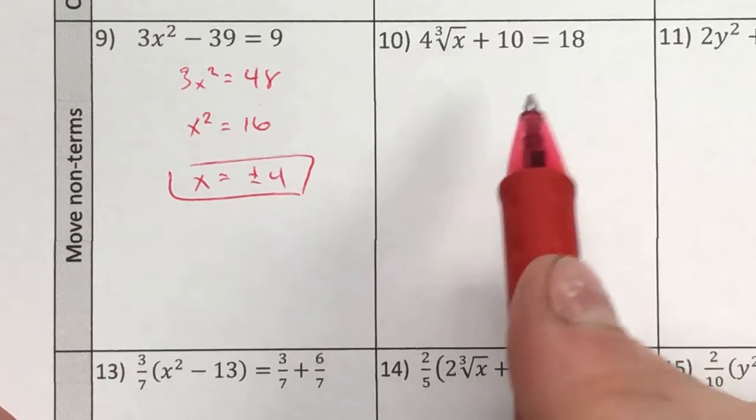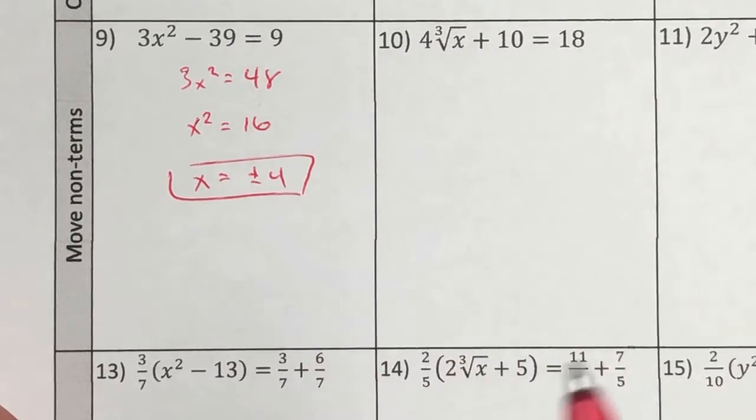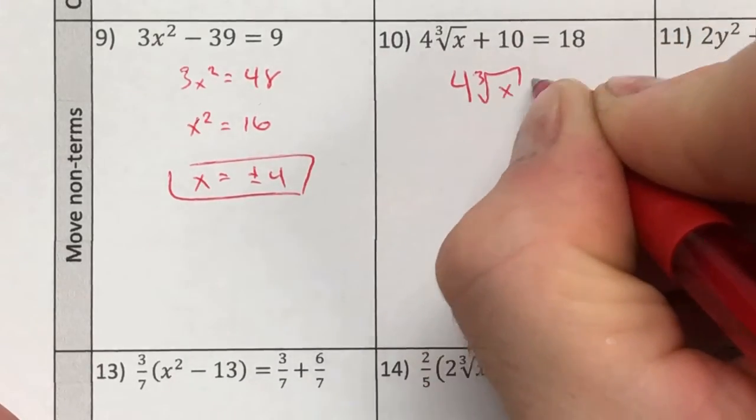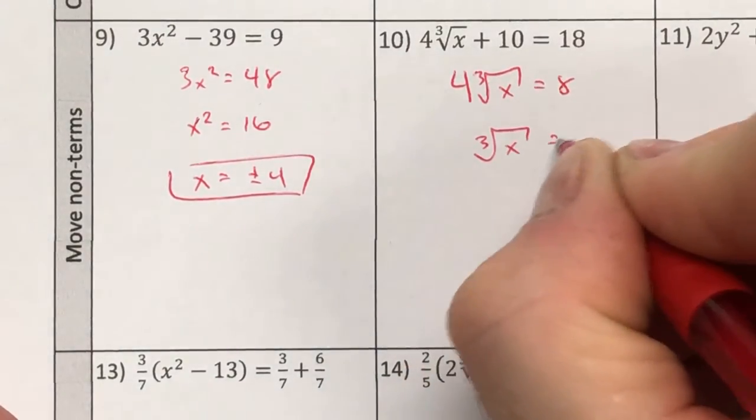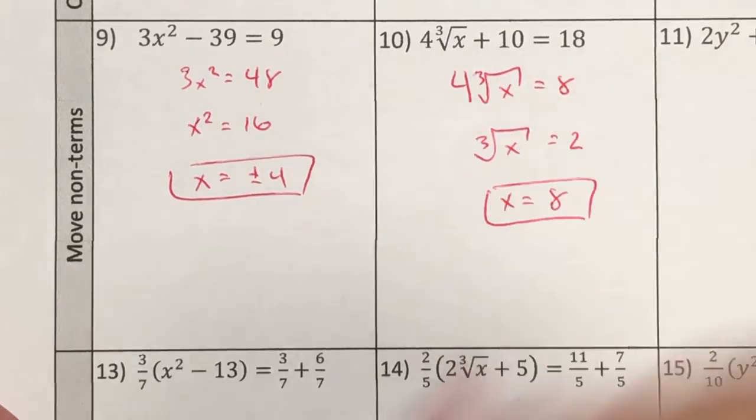Same thing applies over here. A lot going on, but if I'm solving for x, this doesn't have an x, move it to the other side. The way we do that is we subtract it. Then we clear the coefficient. And we clear the index.